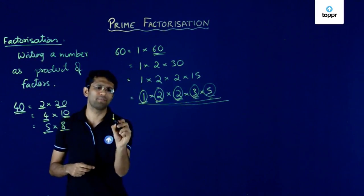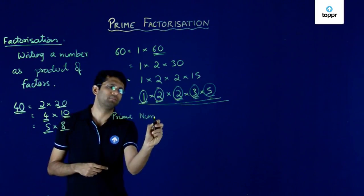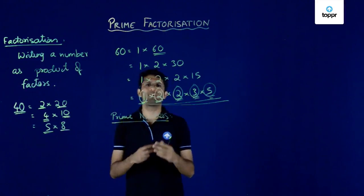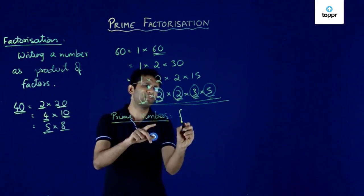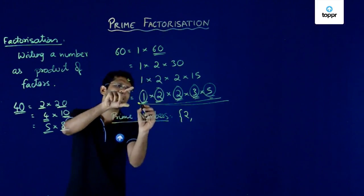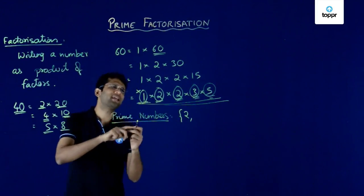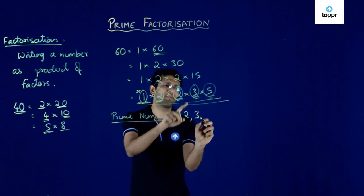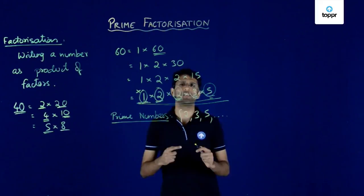So we have now understood what prime numbers are. Numbers that cannot be further expressed as a product of two smaller factors are called prime numbers. Note that when we talk about prime numbers, we always exclude 1 from the list. So 2 is a prime number. Similarly, 3 is also a prime number, 5 is also a prime number, and if you continue you will find many more prime numbers like this.